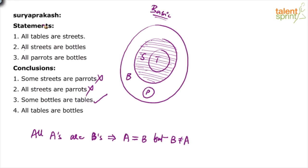Streets can be replaced with bottles because all the streets are bottles. Now if you go by that, in statement 1 we have all tables are streets. Can we replace streets with bottles? Yes. So statement 1 becomes all tables are bottles. And for all A's are B's, the definite conclusion is some B's are A's — the basics of syllogisms. For all A's are B's, the definite conclusion which need not be checked with a diagram is some B's are A's. So if all tables are bottles, some bottles are tables — definitely true. So even without drawing the possible diagrams, I can simply conclude: conclusion number 3 is true.